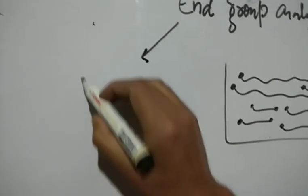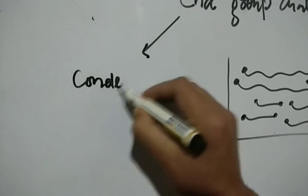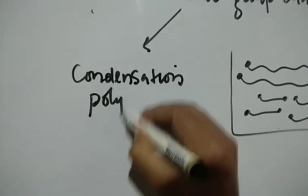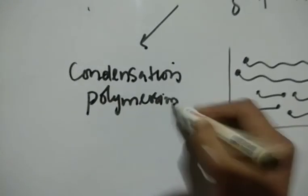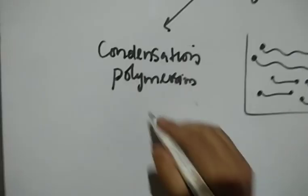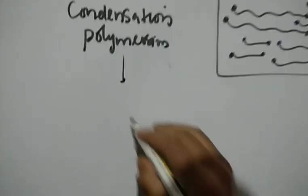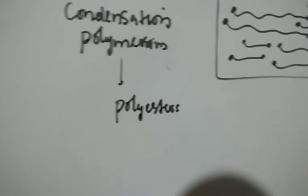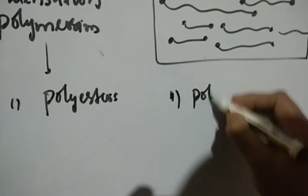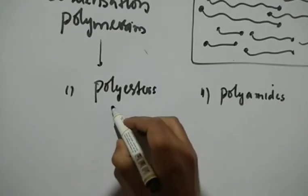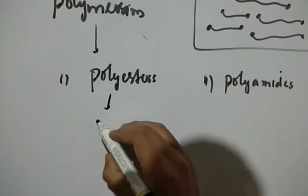This method is used for polymers obtained by condensation polymerization. It is important to note that only polymers obtained through the condensation polymerization mechanism can have their number average molecular weight calculated through end group analysis. For example, condensation polymers include polyesters and polyamides.